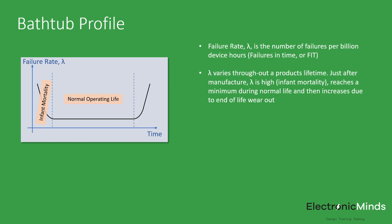During normal operating life, lambda reaches a roughly constant level, which represents normal failure mechanisms. And at the end of life, lambda begins to increase due to wear-out effects of some components, and we will discuss some of the most common shortly. This increase in lambda indicates the normal useful life of the product.